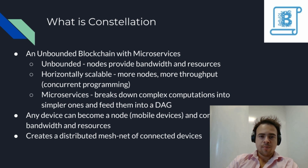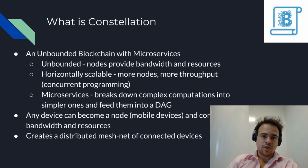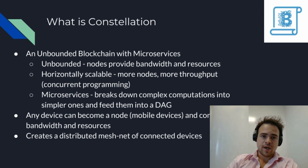Unbounded means that unlike a regular blockchain — where adding a new node just means there's a new node that needs a full copy of the blockchain — instead, each new node adds their own bandwidth and resources to the network. This makes it horizontally scalable, meaning the more nodes there are, the higher the throughput. This is enabled by using concurrent programming.